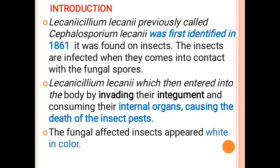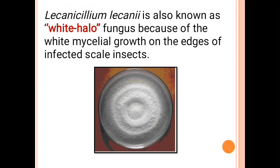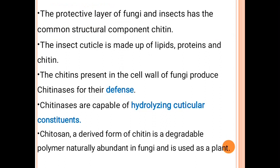Verticillium lecanii was first isolated and identified in 1861, found on insects. It is also called white hallow fungus because of its white mycelial growth. Both fungi and insects share a common protective layer called chitin. The insect cuticle is made up of lipid, proteins, and chitin, so chitinase enzymes produced by the fungal cell wall hydrolyze the insect cuticular constituents.